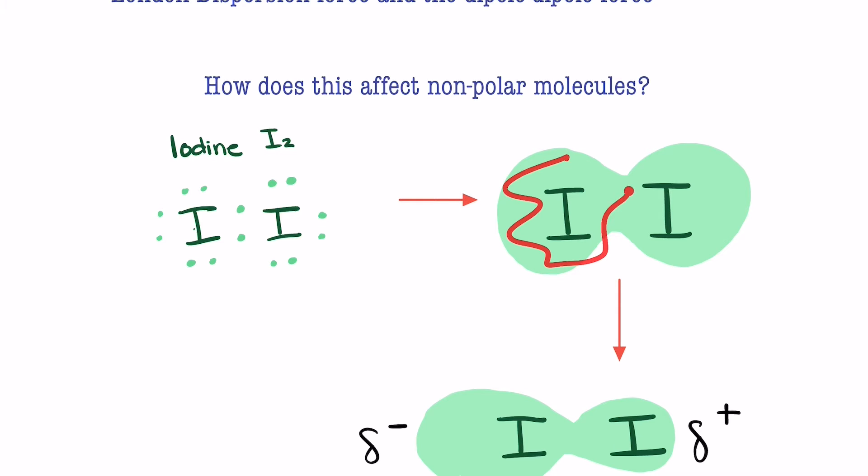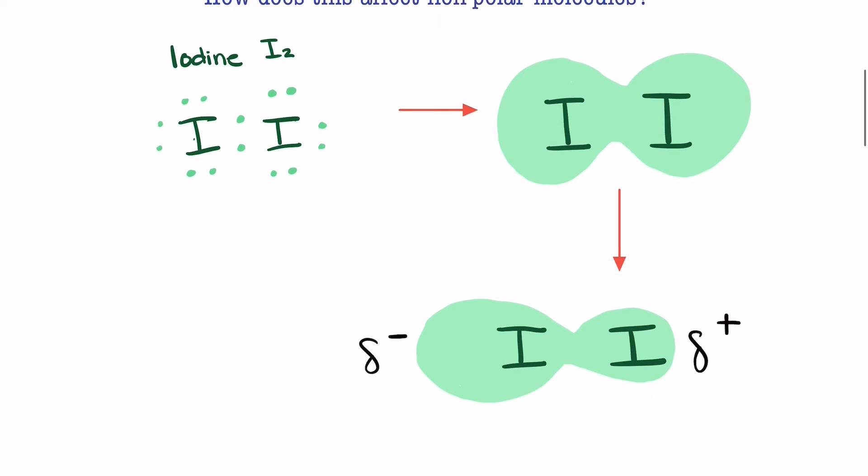Electrons really operate more in a cloud around the nucleus of an atom. This light green area here is the electron cloud. We also know that electrons are constantly moving, and what happens when they're constantly moving is that for a split second at a time, just by happenstance, the electrons might migrate all to one side.